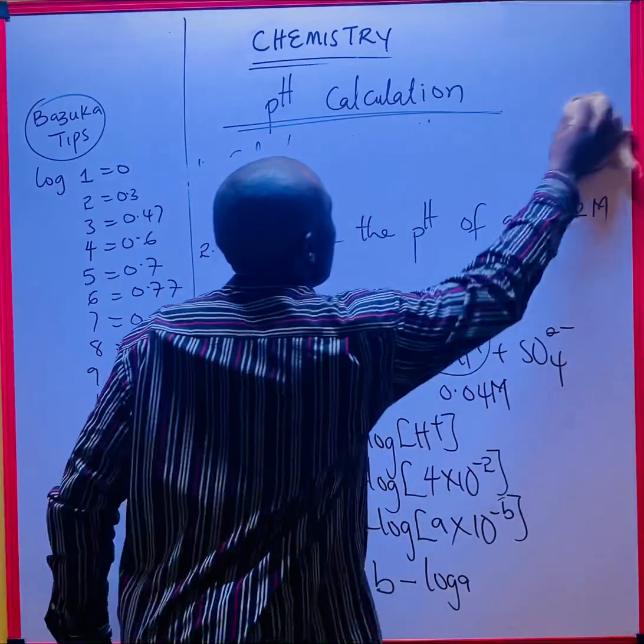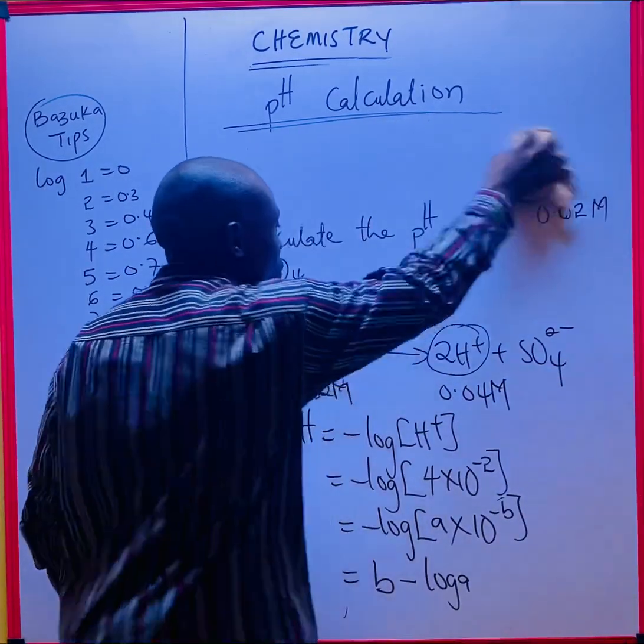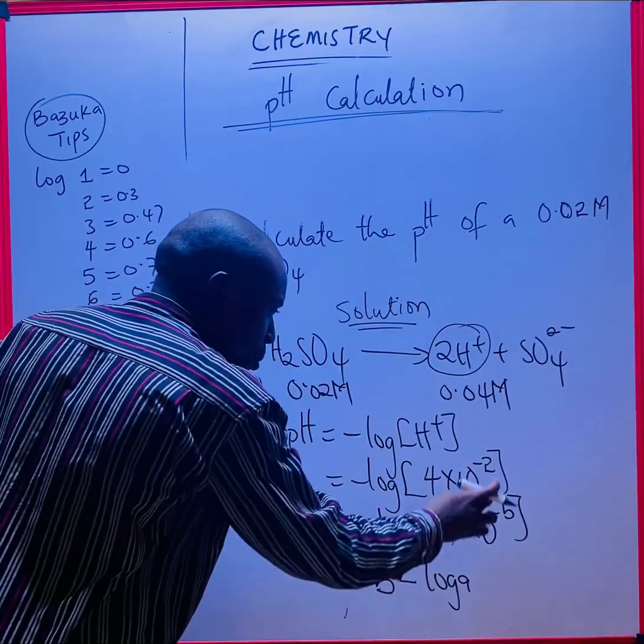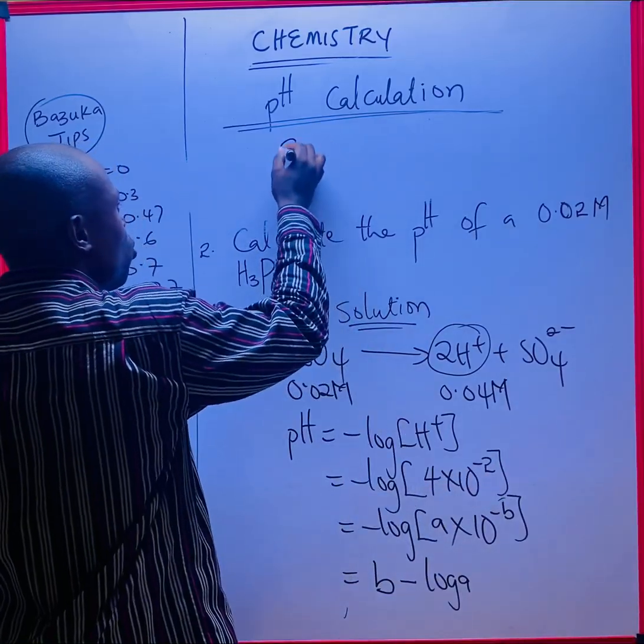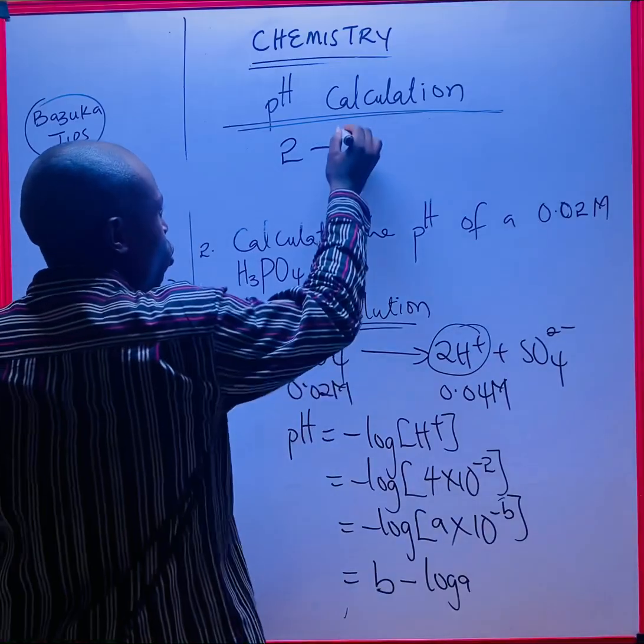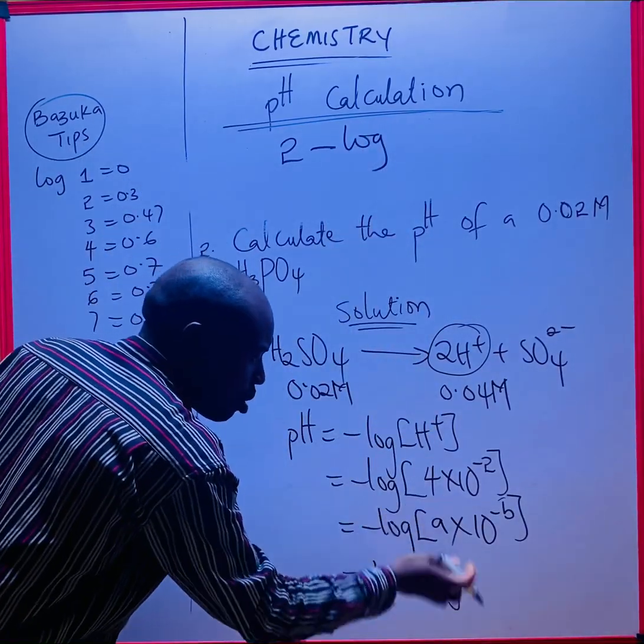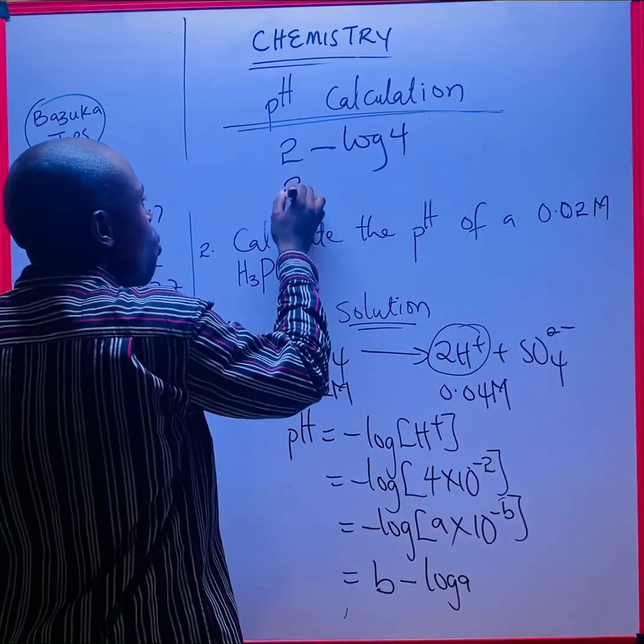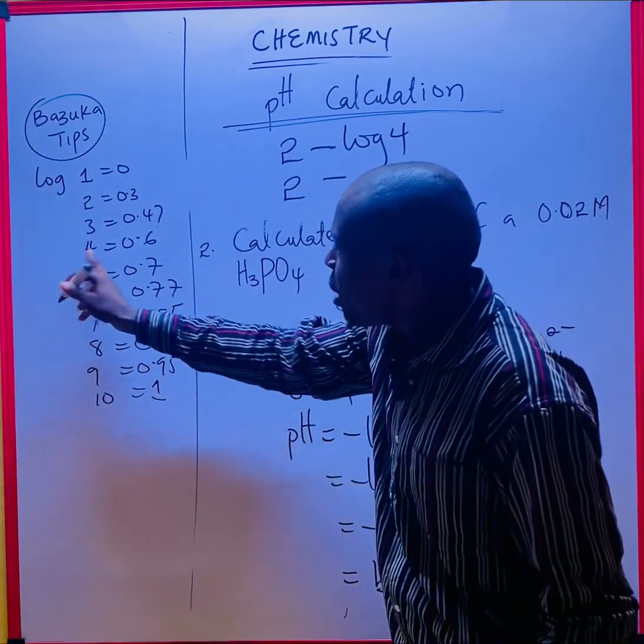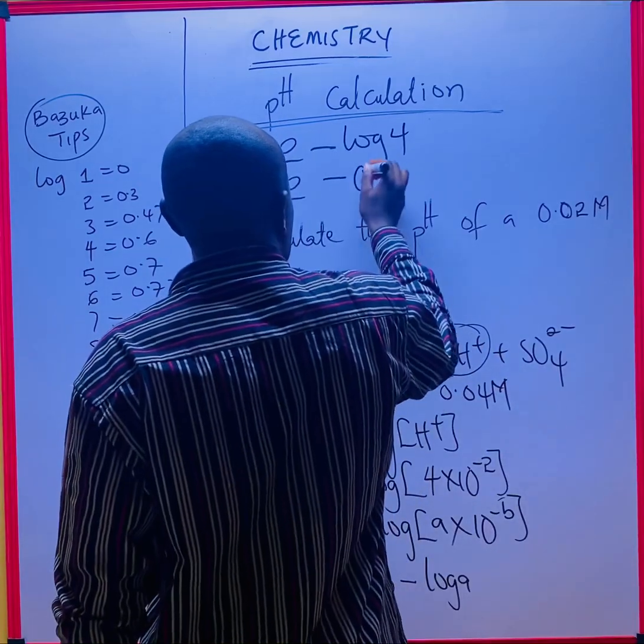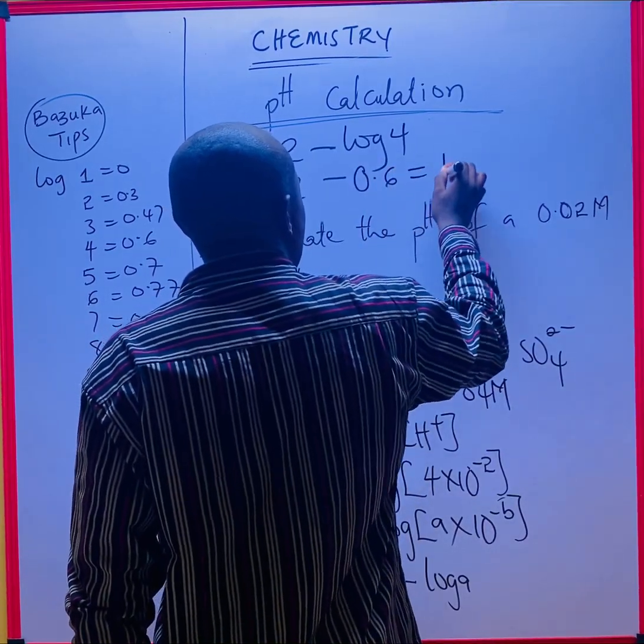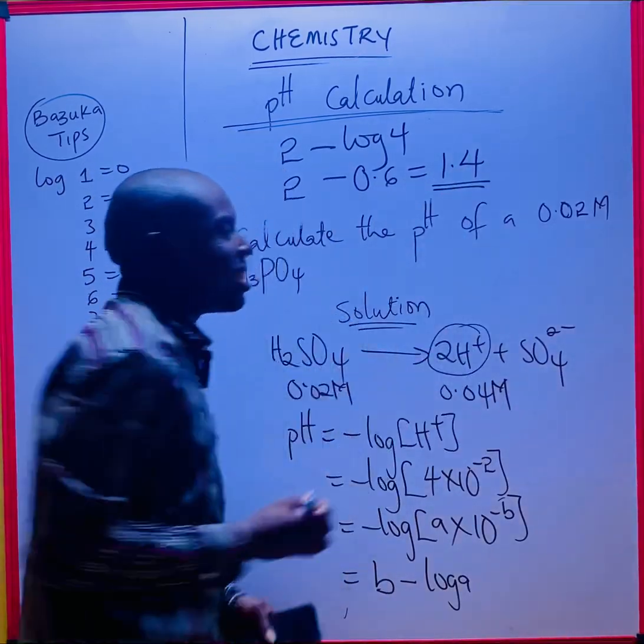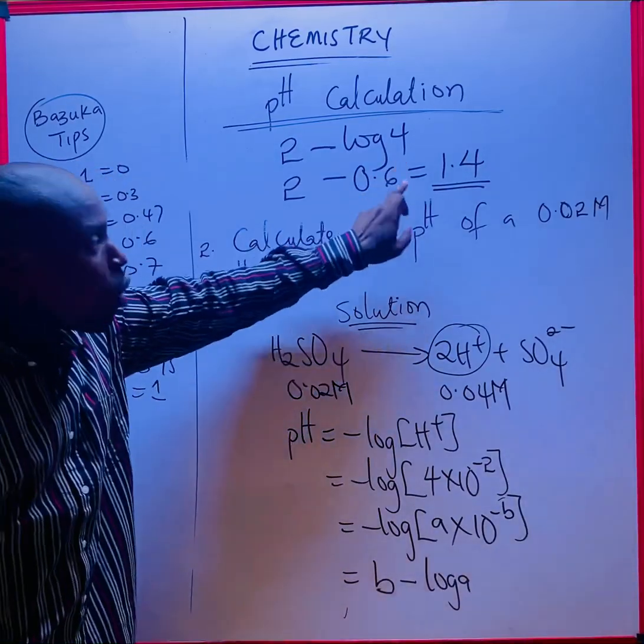What is my b from here? My b is 2, so it will be 2 minus log a. What is my a? Compare them. My a from here is 4, so it's 2 minus log 4. Log 4 is 0.6, which will be 0.6, which equals 1.4. This is the final answer. If you press your calculator now, this is what you have to get.